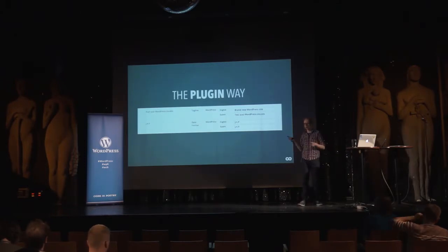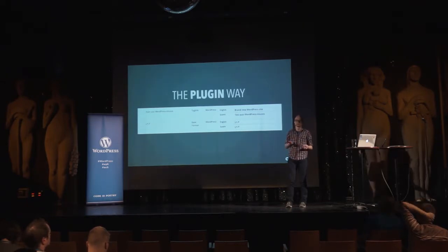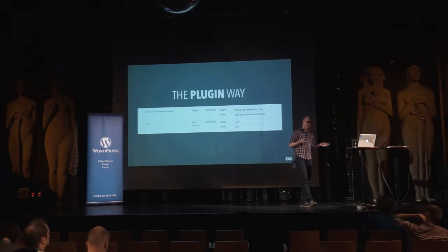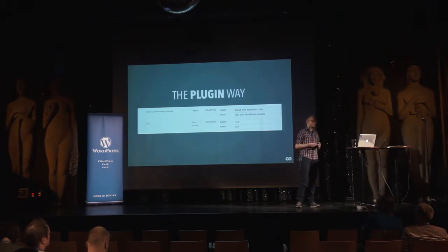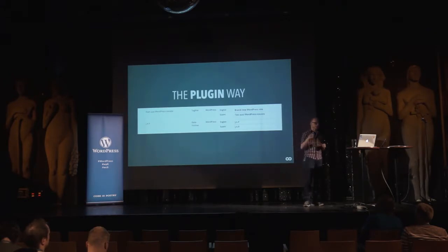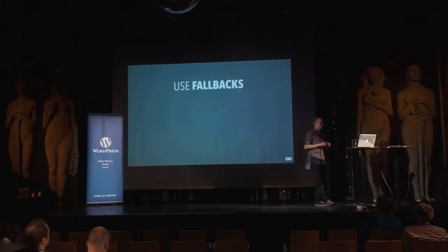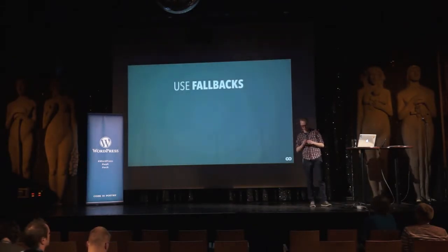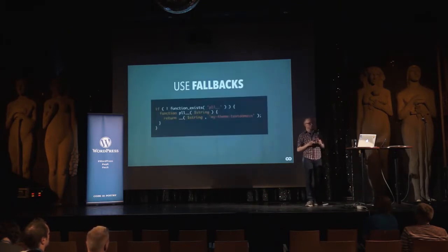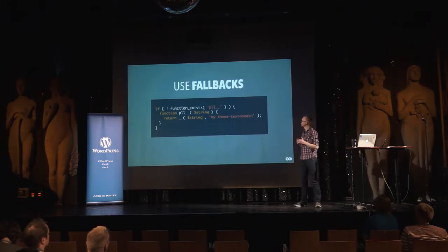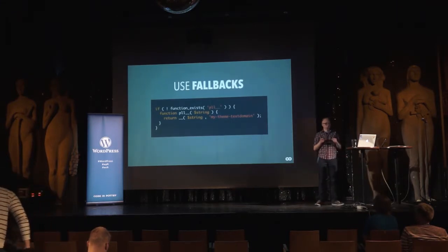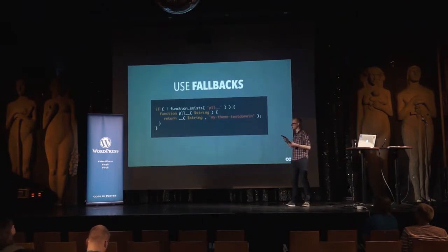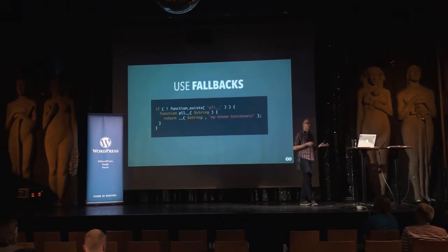There is obviously the downside that translations are stored in the database, making it harder to move them between environments. But I think that's only a small downside, and someone should actually write a plugin to move them along. To make sure we don't break everything, we use fallbacks — in our theme we add fallback functions that fall back the Polylang translation functions to the default WordPress translation functions. So if you're developing a theme for sale, you could make it Polylang or WPML compatible by adding these functions.